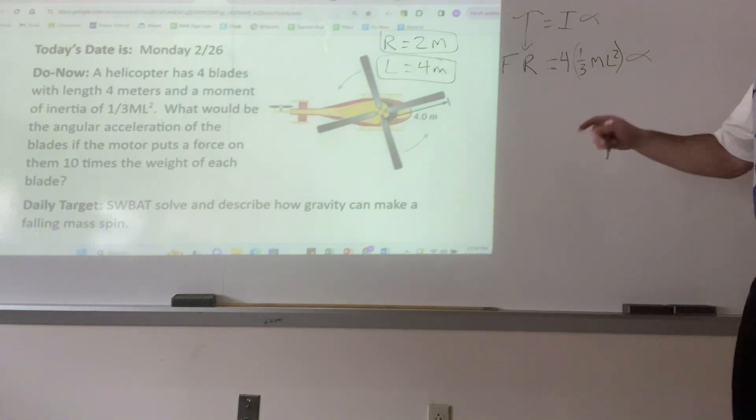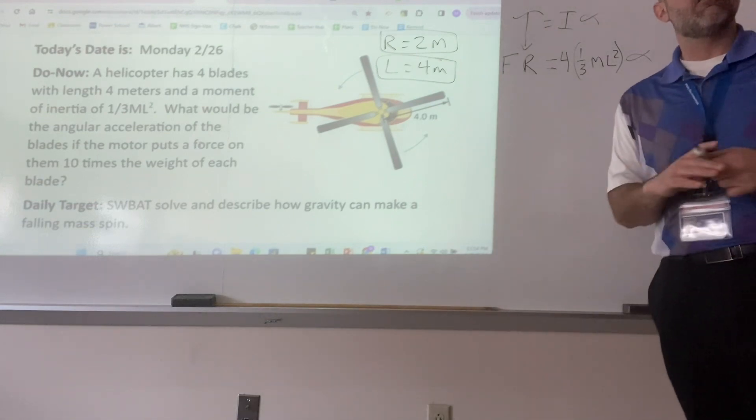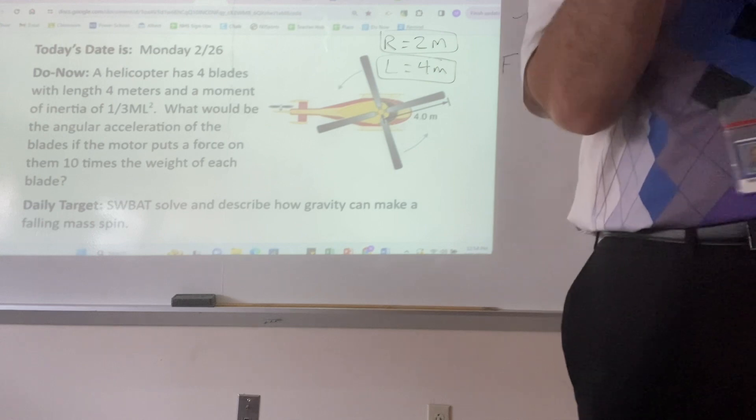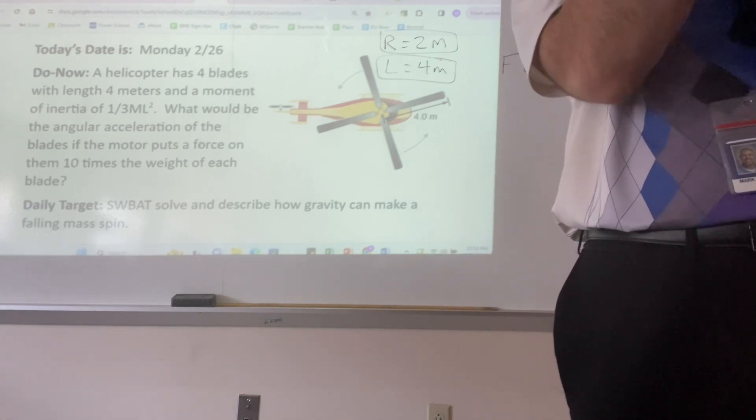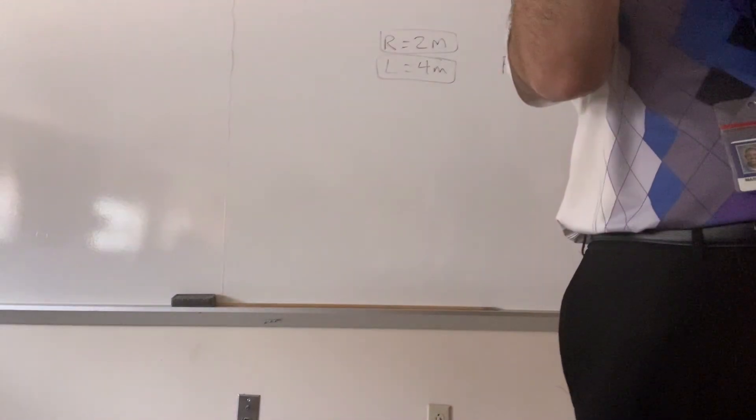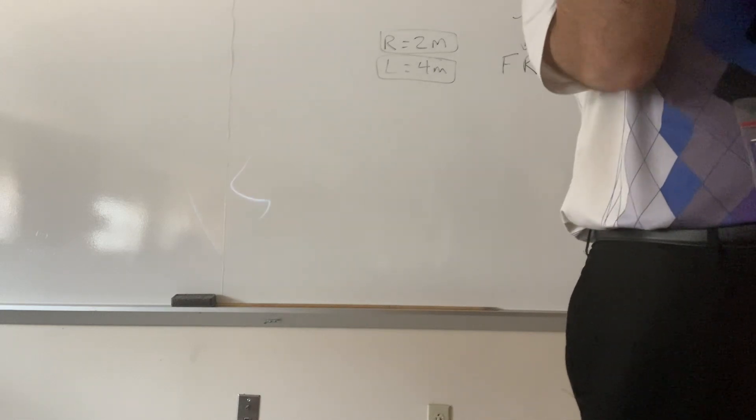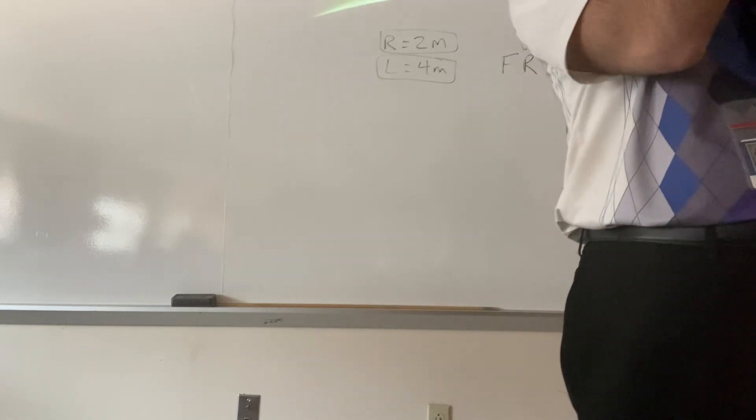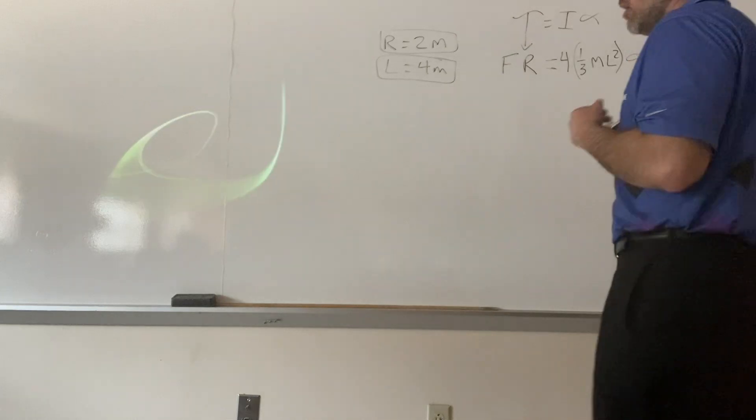Now, this one's weird because it says the force is 10 times the weight. The weight is the same thing as what? The weight is what force? It's not mass. Weight is force of gravity, which is always, FG always equals MG, right? Does that make sense? The force gravity is M times G.